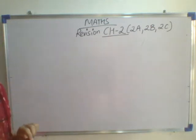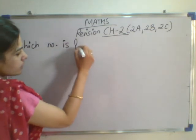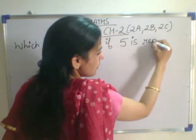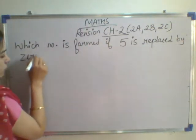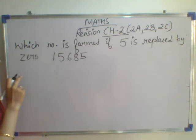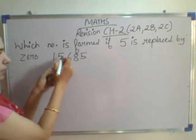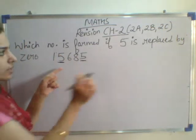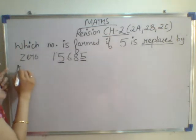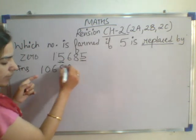Now, if I ask you which number is formed if 5 is replaced by 0 in the given number. Look at this number — how many times does 5 come? It comes 2 times. Simply, instead of each 5, you have to write 0 because you have to replace 5 with 0. So: instead of the first 5, write 0; then 6, 8; and where 5 comes again, write 0 there too.